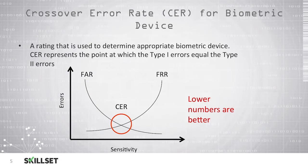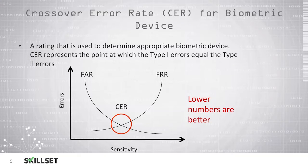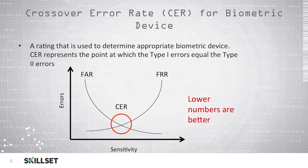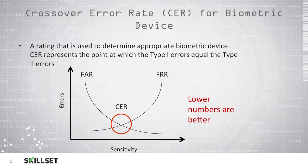The crossover error rate for biometric devices is also known as the CER. This rating is used to help you determine what is an acceptable biometric device for your environment. The crossover error rate is the point at which the type 1 errors and the type 2 errors meet.